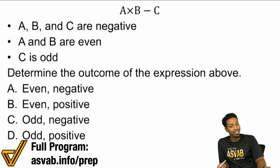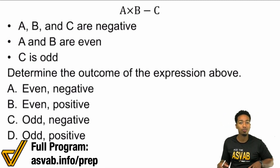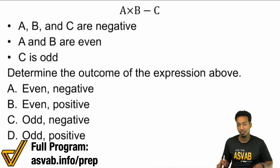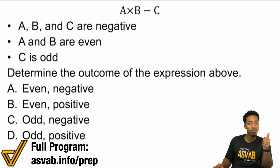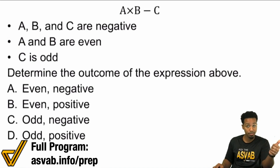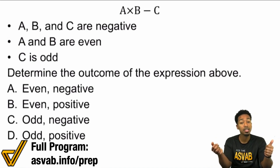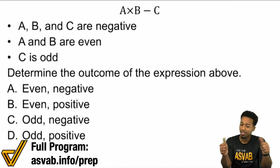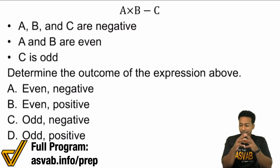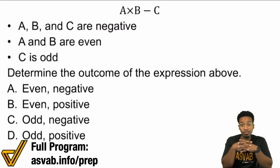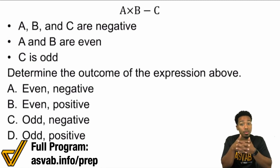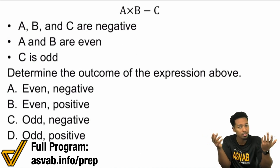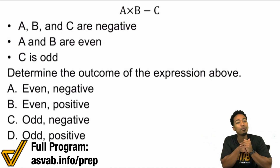This might be confusing, but here's what we need to do. Notice that there are two types of descriptions given. We have one where we're referring to A, B, and C as either positive or negative. And on the other hand, we're referring to A, B, and C as either even or odd. Are there rules for how we deal with evens and odds when multiplying and dividing? Are there rules for dealing with positives and negatives when multiplying, dividing, adding, and subtracting? Yeah, there are. Absolutely.